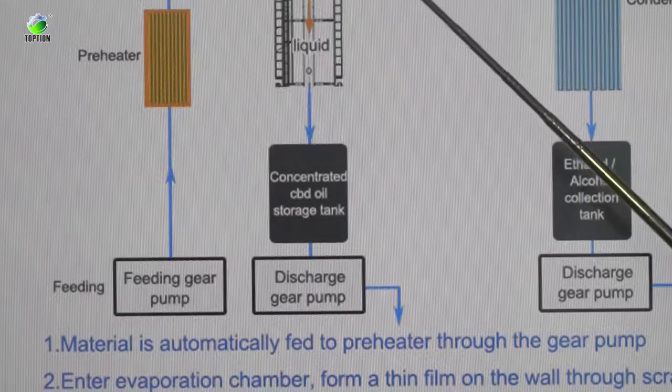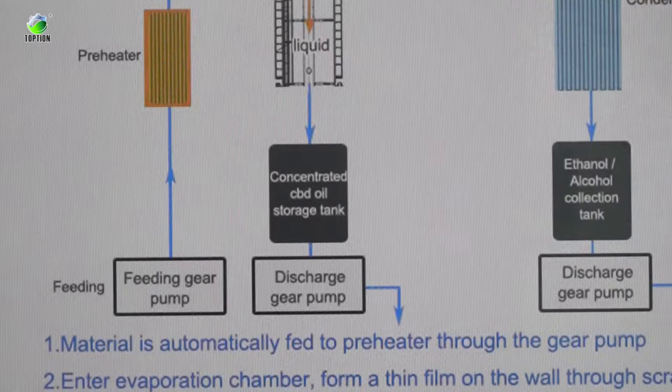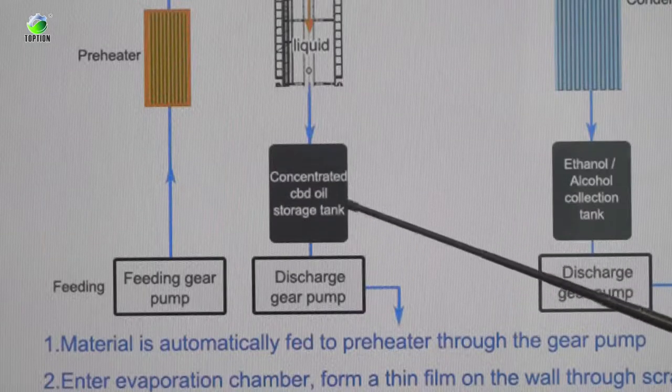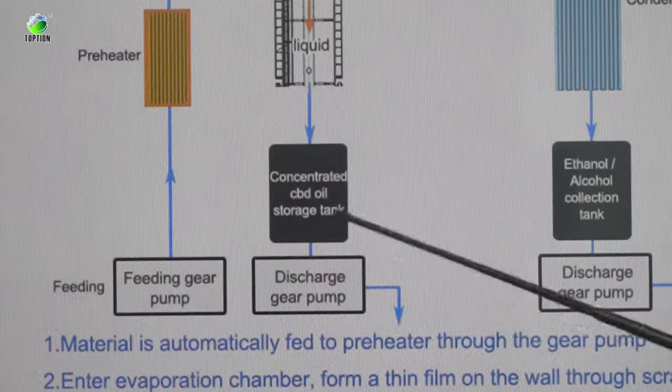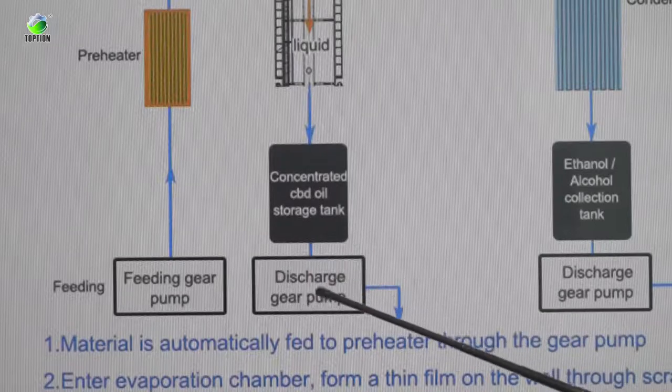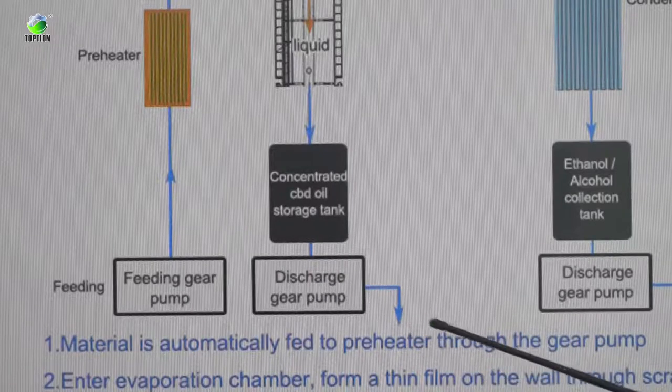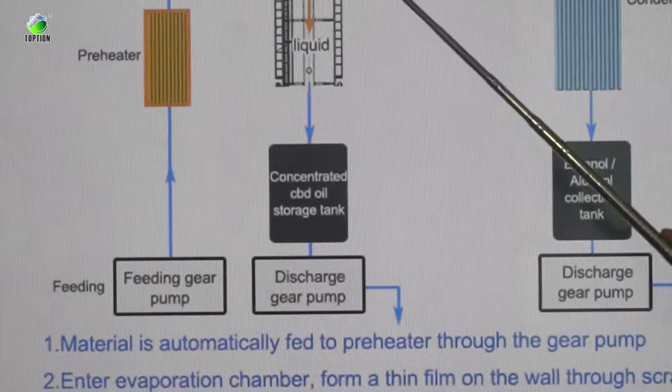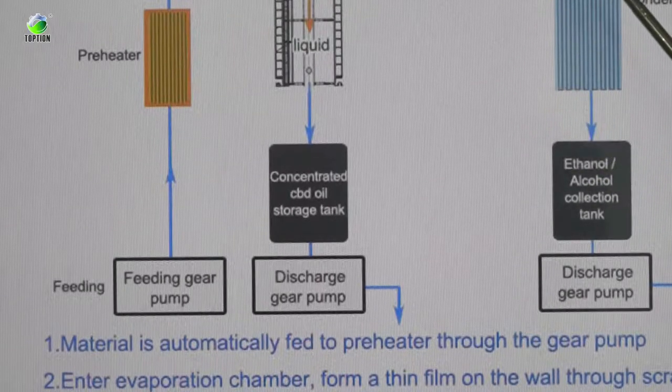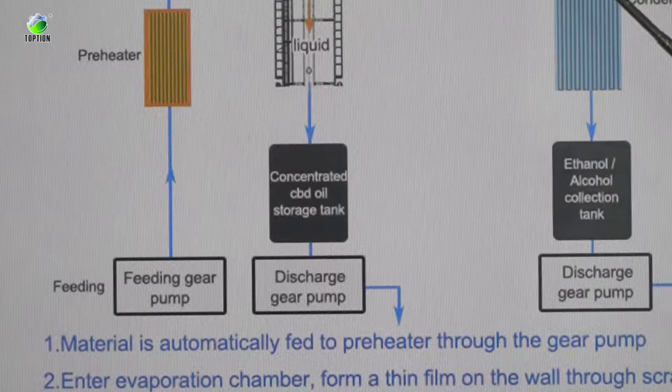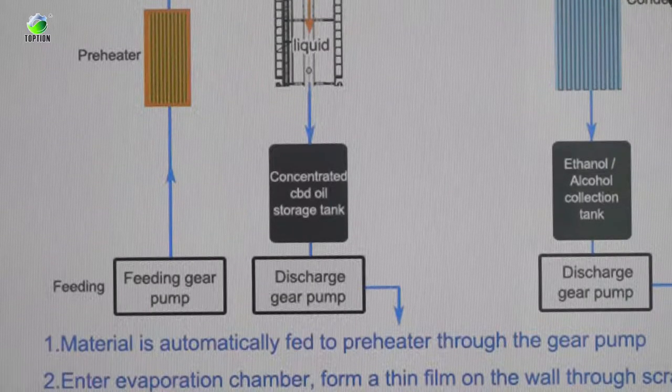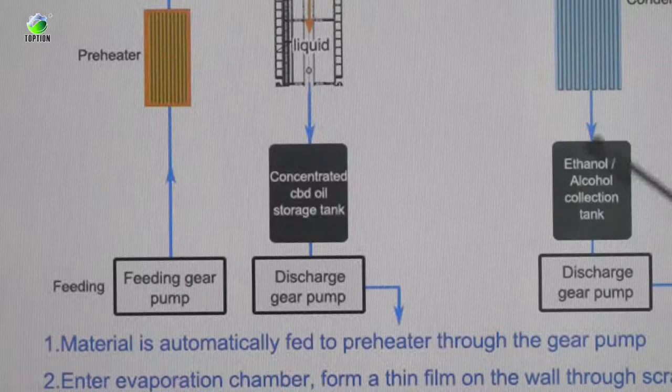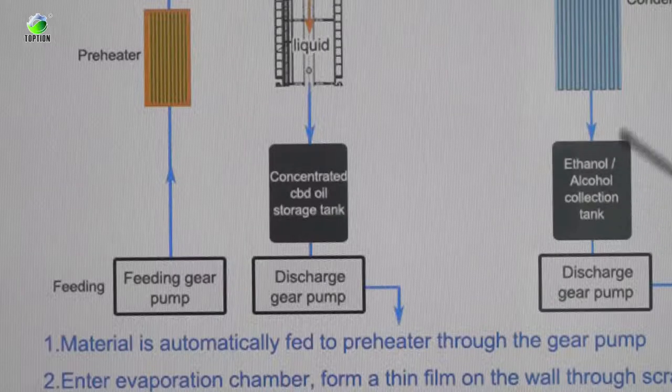After heating, the gas will flow up and the liquid will flow down. Here is concentrated CBD oil storage tank. Then using the discharge gear pumps, the material can be collected here. And the gas will flow here by this built-in stainless steel wire packing. And some gas will come to the condenser for concentration. So the solvent such as ethanol will be collected here.